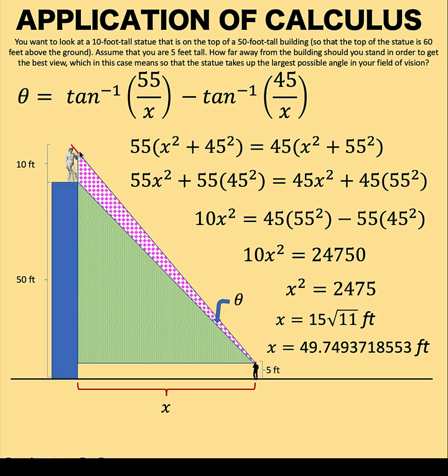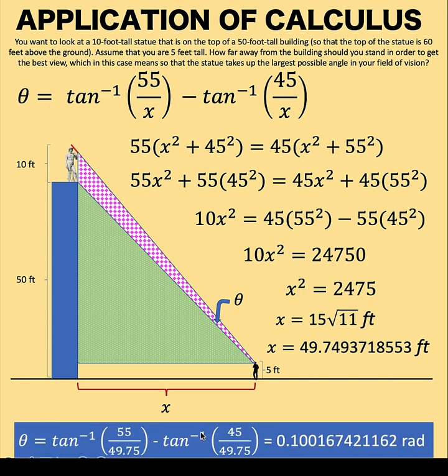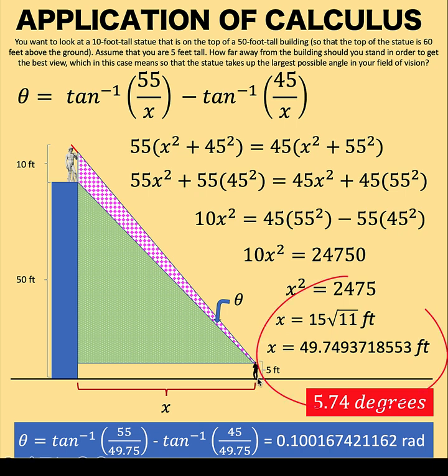And so substituting now this value to this equation in order to find the angle, we have theta equals 0.100167421162 radians, or 5.75 degrees. So this means that the largest possible angle in the field of vision of this man is about 5.74 degrees. And that happens when he is about 49.75 feet away from the building. And this problem is now solved.